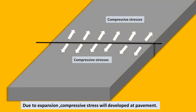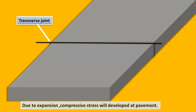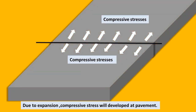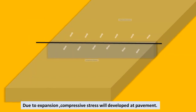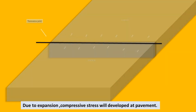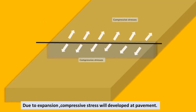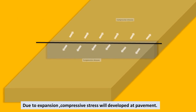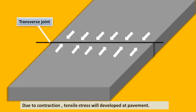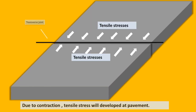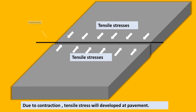The transverse joint can be an expansion, contraction, or construction joint due to temperature variation. The concrete can expand or contract. In the expansion case, compressive stress will develop at the pavement, so we should provide some space between two adjacent slabs at the transverse joint. In the case of contraction of the slab, tensile stress will develop at the pavement. To prevent this tensile stress, we should provide some space between two adjacent slabs at the transverse joint to relieve the tensile or compressive stress.